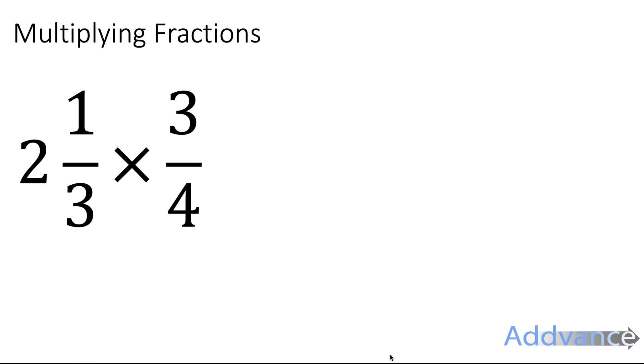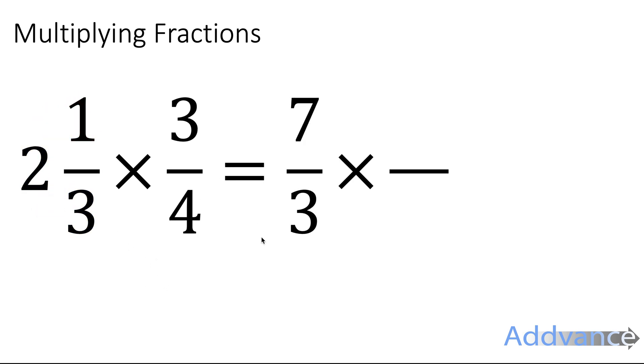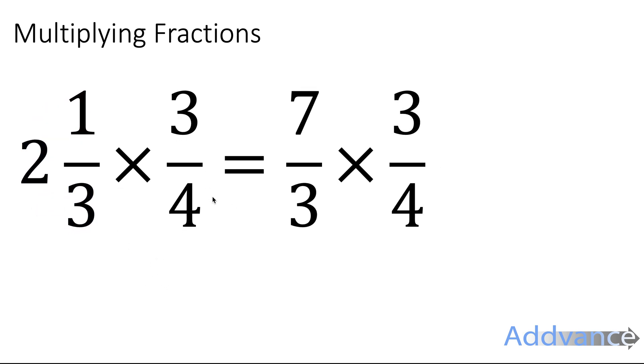Let's see one more example. So here we've got 2 and 1 third times 3 quarters. The first thing we need to do is make it into improper fractions. If you haven't seen my video on mixed numbers and improper fractions, you need to watch that now before you continue and the link will be at the top of the video. We do 2 times 3 plus 1 is 7 and it's 7 thirds times 3 quarters.